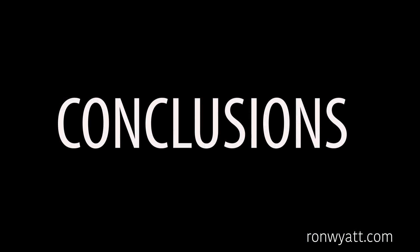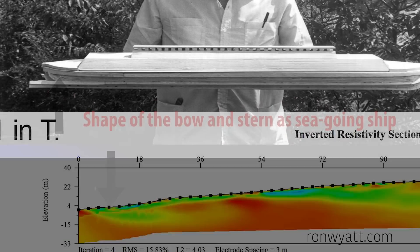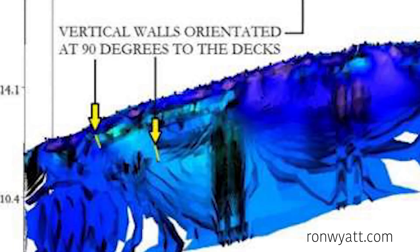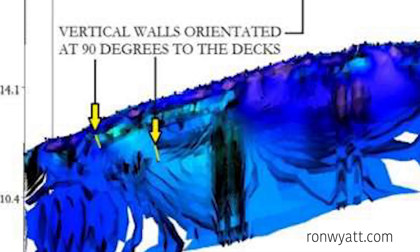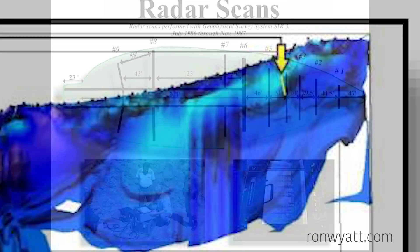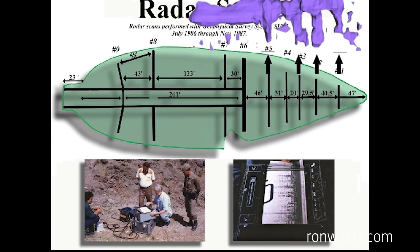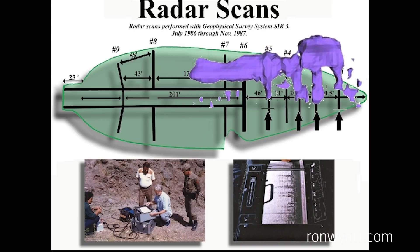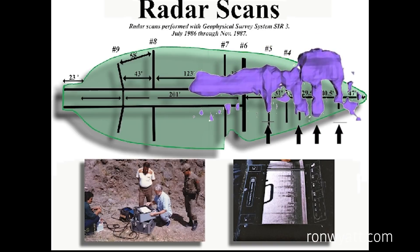These scans conclusively show that this site is not a rock upthrust. It appears to be an object that displays every evidence of being man-made. When the resistivity images were compared to the results of the radar scans performed by Ron Wyatt, it was found that the positions of these structures were in exactly the same locations within the ship. This picture shows the results of the resistivity images superimposed upon the results of the radar scans performed by Ron.